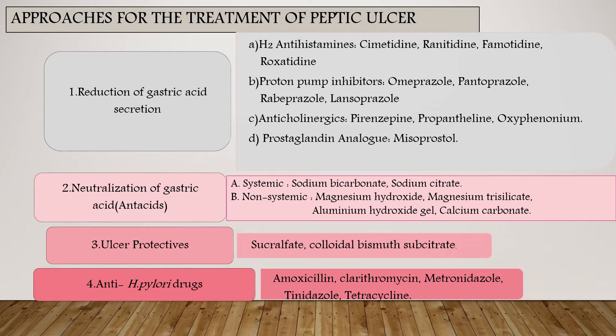The second treatment approach is neutralization of gastric acid using antacids. Antacids are of two types: systemic and non-systemic. Systemic antacids used are sodium bicarbonate and sodium citrate. Non-systemic antacids used are magnesium hydroxide, magnesium trisilicate, aluminum hydroxide gel, and calcium carbonate.